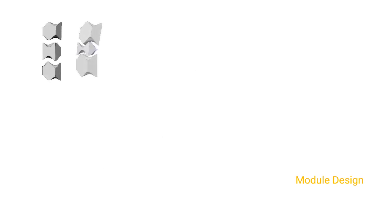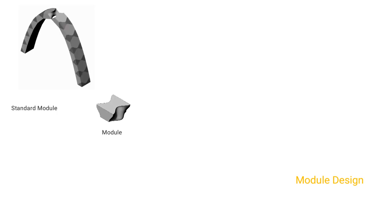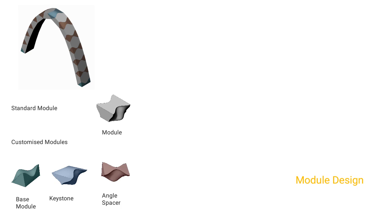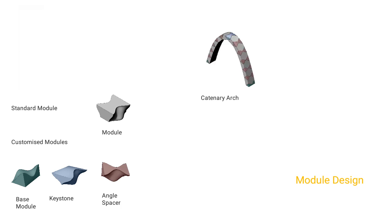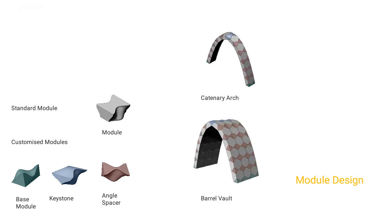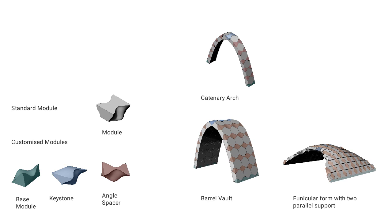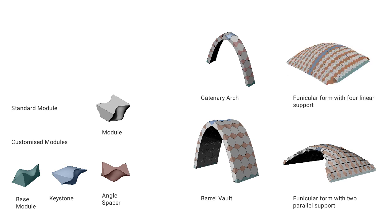To cater to the required curvature of forms, the assembly pattern introduces special modules called angle spacers, responding to a range of angles. To limit customization, the assembly consists of alternate standard and customized modules. The base module, keystone, and angle spacers require customization depending on the curvature. The modules were assembled into a simple catenary arch, a funicular barrel vault, a funicular vault with two parallel supports, and a funicular vault with four linear supports.